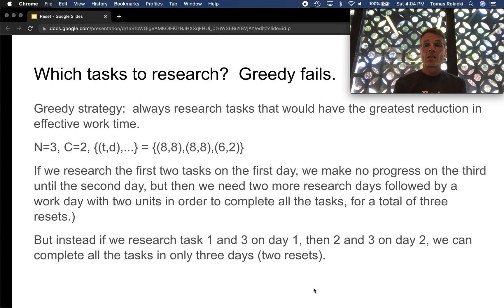And then we've got a third task, which normally takes six seconds, but research decreases it by two seconds each time. If we're greedy and we research the two hard tasks on the first day, we still need two additional days to research the third task, followed by a last day to complete the task. So this totals four days. On the other hand, if we research the first and third task on the first day, the second and third task on the second day, then we can finish the third task and all of them on that third day. So we only need two resets. So greedy is not going to solve this problem.